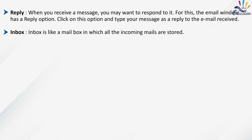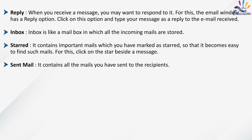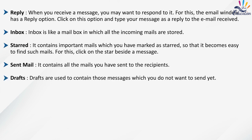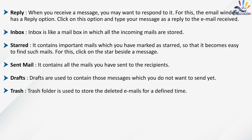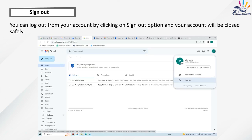Inbox is like a mailbox in which all incoming mails are stored. Starred: Contains important mails which you have marked as starred, so that it becomes easy to find them — click on the star beside a message to mark it. Sent Mail: Contains all the mails you have sent to recipients. Drafts: Used to contain messages which you do not want to send yet. Trash: Stores deleted emails for a defined time. All Mail: An archive folder where all emails are stored with a label. Sign Out: You can log out from your account by clicking Sign Out, and your account will be closed safely.